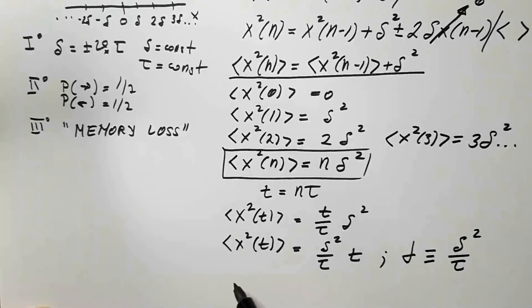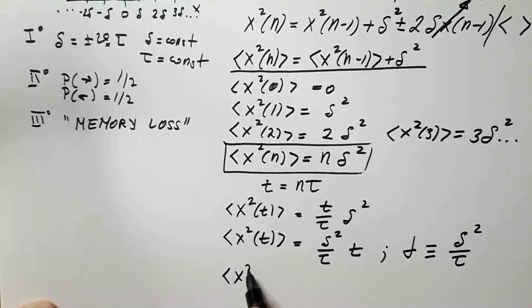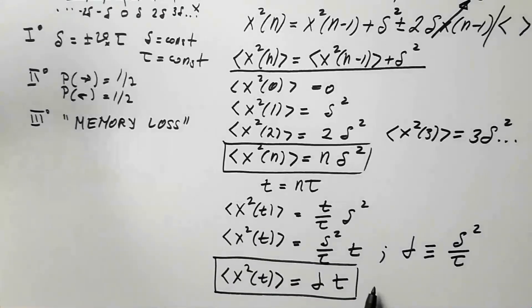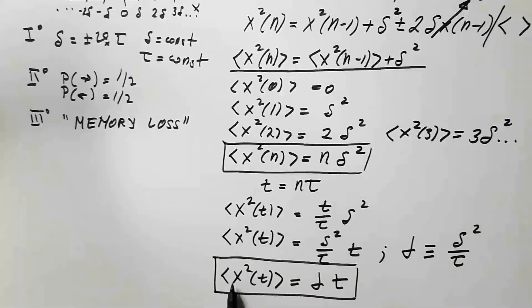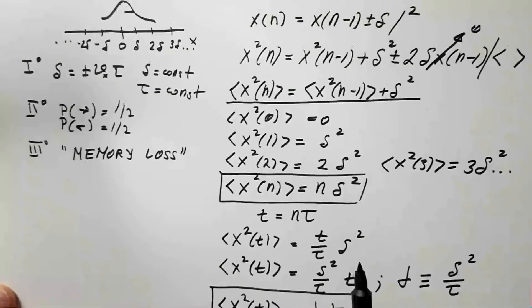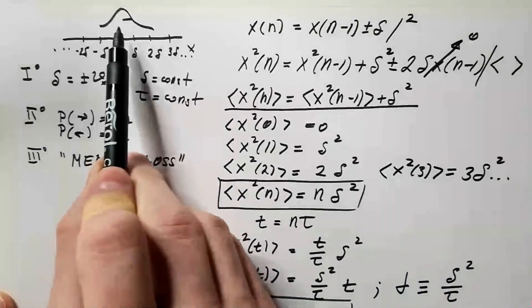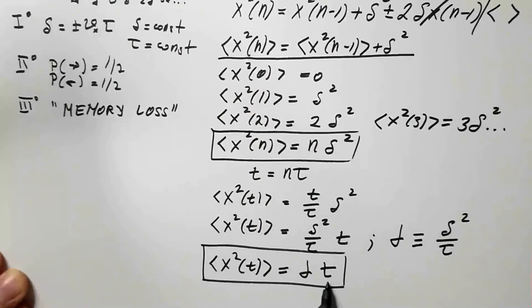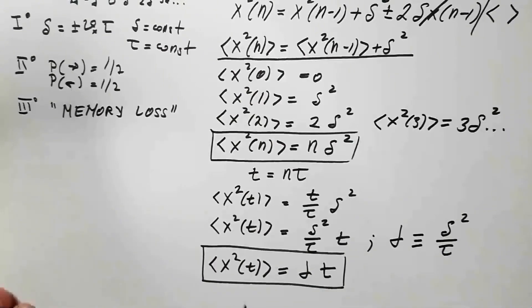And voila, I get that the mean square displacement is equal to alpha times time. This tells me if I take a square root of this equation that the root mean square displacement will be a function of the square root of time and not time, which means that the spread of this distribution, or how far the particle will roam away from x equals zero, will not depend on time but the square root of time.